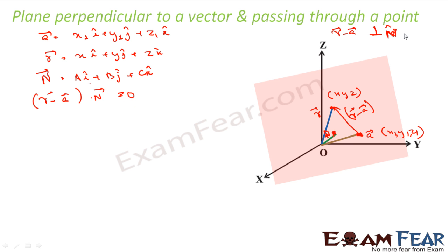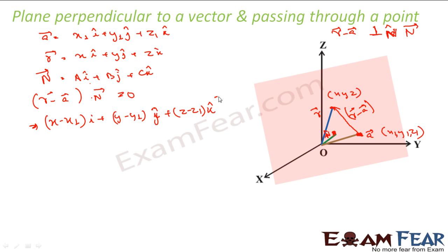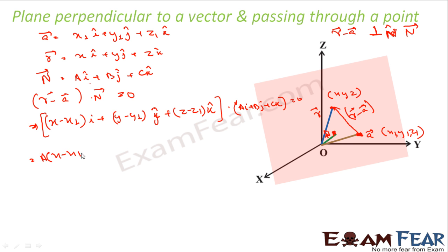Please note: if you take n or n-cap or n vector it does not make much difference — both will give you almost the same answer. So putting the values, r minus a will be (x minus x1)·i-cap plus (y minus y1)·j-cap plus (z minus z1)·k-cap, and this dot n vector, that is a·i plus b·j plus c·k, equals 0. What you get is a(x − x1) + b(y − y1) + c(z − z1) = 0. That is the equation.